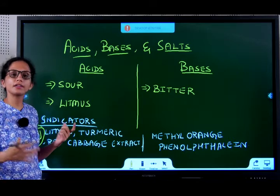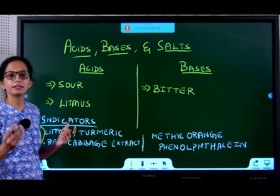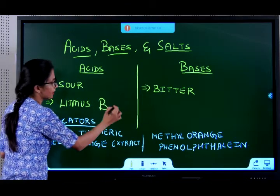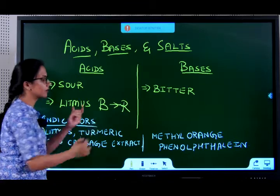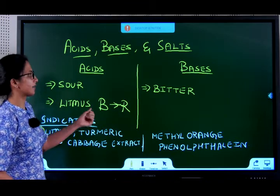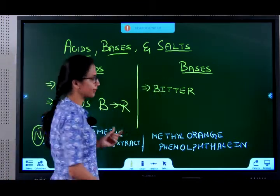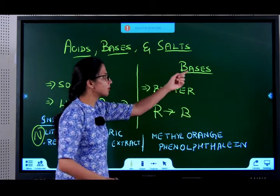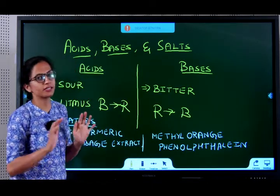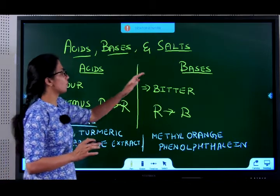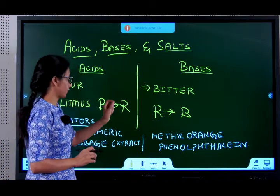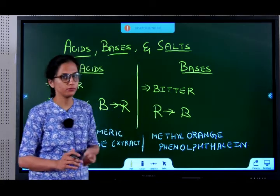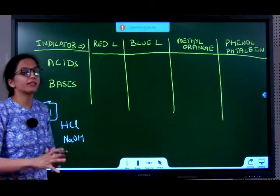Now we study litmus, which you must have heard about in your lower classes. Acids turn blue litmus red; bases turn red litmus blue. If you put a base on a blue litmus, you will see no color change. To see a color change, you have to put the base on a red litmus, and the red litmus will become blue.